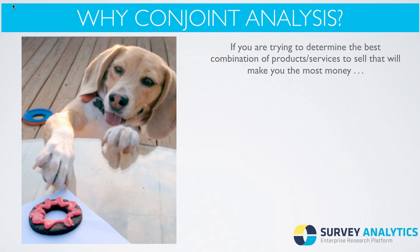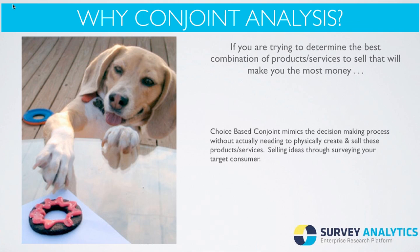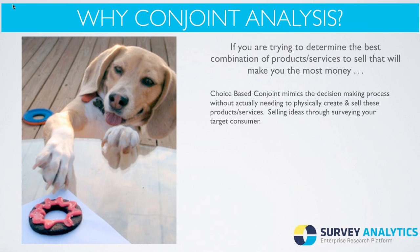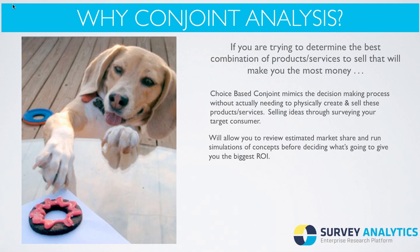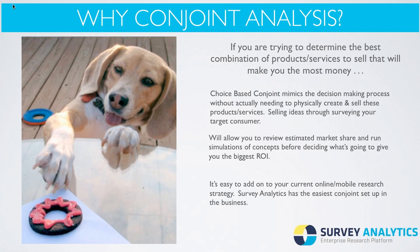So why conjoint analysis? If you're trying to determine the best combination of products or services to sell that would make you the most money, a choice-based conjoint mimics that decision-making process without actually having to physically create and sell those products and services. You can be selling ideas or existing products to a target customer without having to physically put an investment into them. It also allows you to review estimated market share and run simulations on concepts before deciding what's going to give you the best return on investment. It's easy to add to your current online or mobile research strategy.